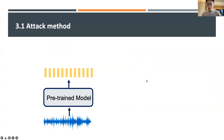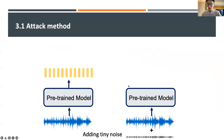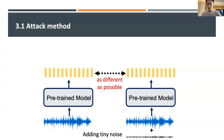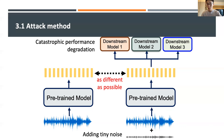For a pre-trained model, attackers can find some tiny adversarial noise and add it to the audio to generate adversarial samples. The adversarial embeddings then become very different from the original ones, causing the performance of all downstream models to drop. Importantly, to conduct the attack, the attacker only needs to know the pre-trained upstream model, without needing to know which downstream model is used.